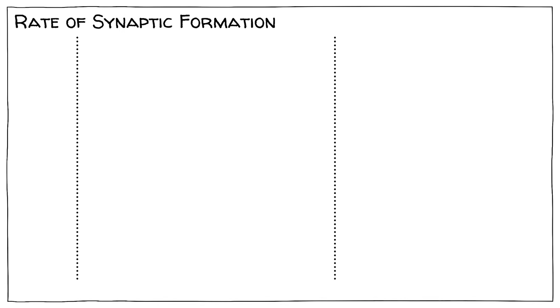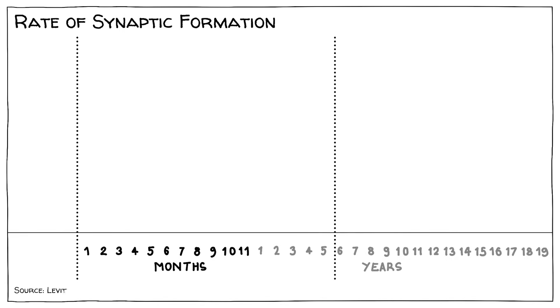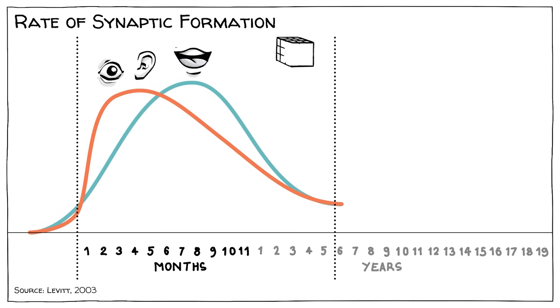If we look, for example, at a child's rate of synaptic formation over the first 11 months and the following years, we can see that the speed at which each new connection for vision and hearing is created peaks at around 3 to 4 months of age. For language, that's around month 8, and higher cognitive functions like decision-making at age 2 to 3.